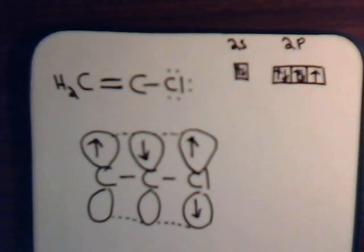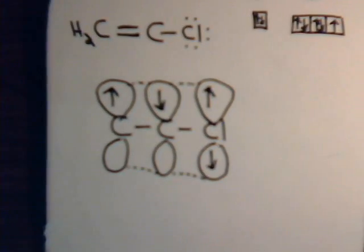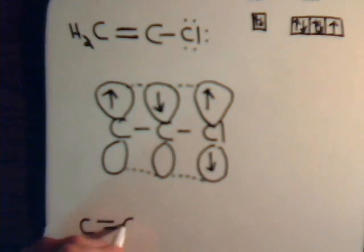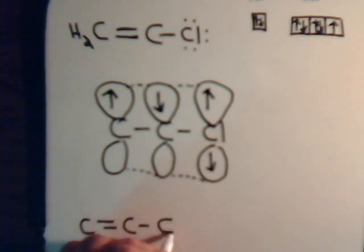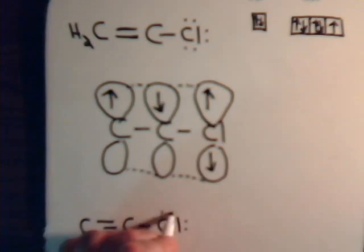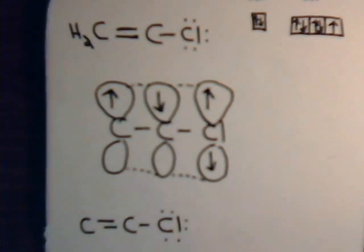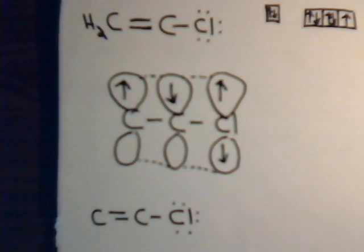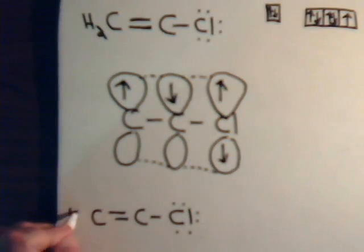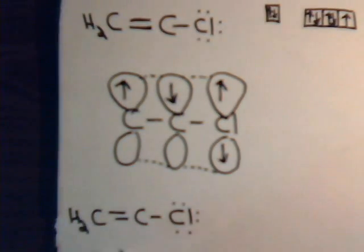So on the Lewis structures now, the canonical forms, we show it like this. Here, in this double bond, the carbons are sharing a pair of pi electrons. Well, suppose that this carbon kept both of the pi electrons for itself. So then there would be no double bond, there would be no pi bond there.